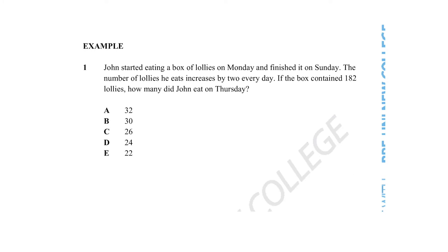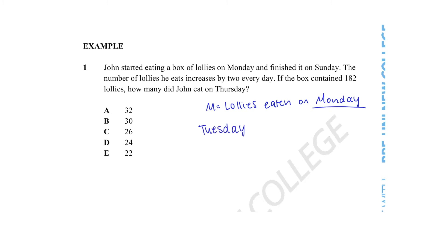Given this is a determining unknowns question, we will start by creating an equation using the information provided. Let the number of lollies John ate on Monday be denoted as m. The question also provides that the number of lollies John eats increases by 2 every day, which means on Tuesday John will be eating the number of lollies he ate on Monday plus 2. So we can create an equation for Tuesday, which would be m plus 2.